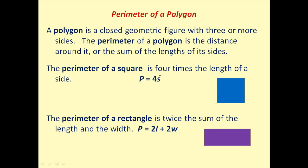The perimeter of a square is four times the length of a side. If I call this side length s, then all of them would have to be length s. Finding the sum of these four sides equals 4s. So if one side is 5 inches, they're all 5 inches, and the perimeter would equal 4 times 5 inches, which gives us 20 inches.